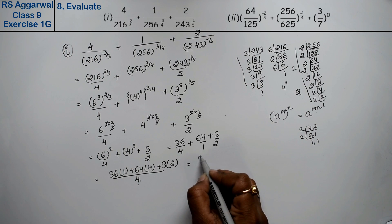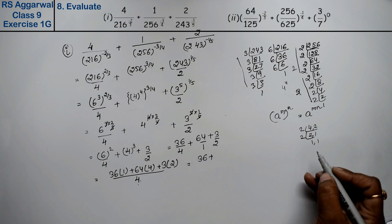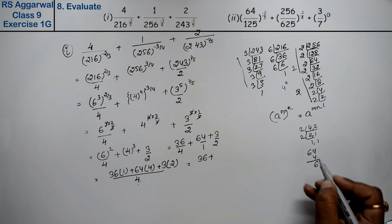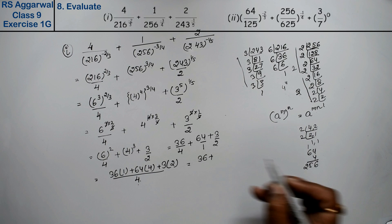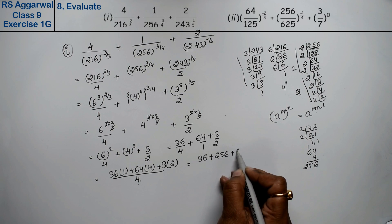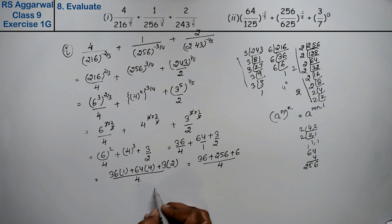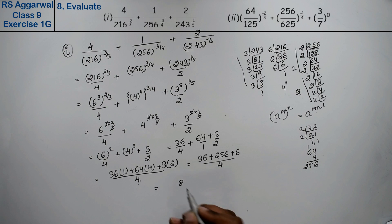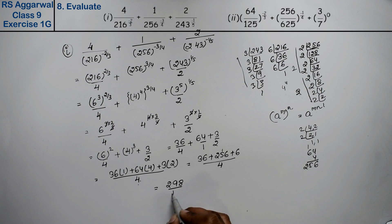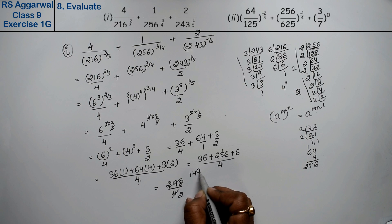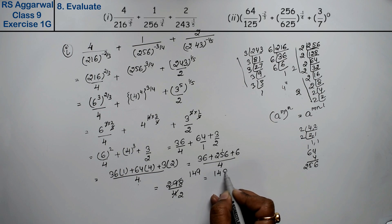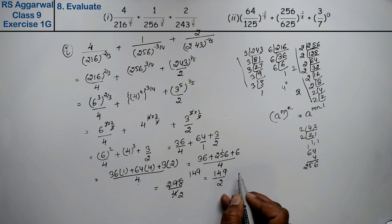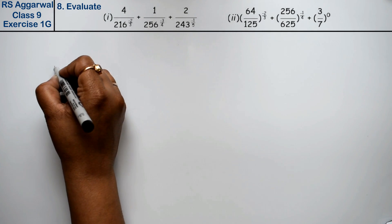So we have 36 upon 4, plus 64, plus 3 upon 2. Taking LCM of 4: 36 + 256 + 6, upon 4. That gives us 36 + 64 = 100, and 64 × 4 = 256, adding 3 upon 2 gives 6 upon 4. Computing: 36 + 256 + 6 = 298, upon 4, which simplifies to 149 upon 2. That is the answer for Part 1.